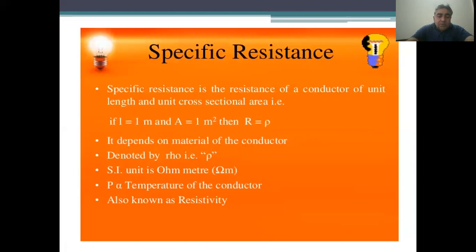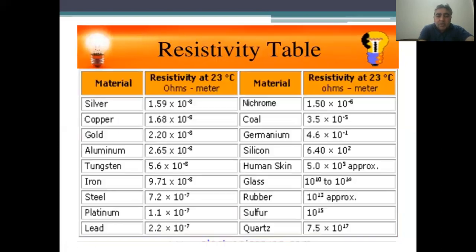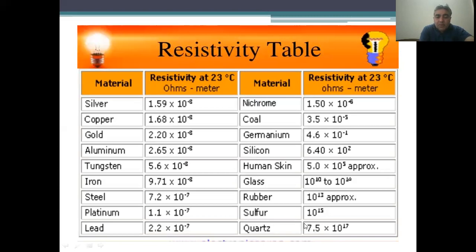Resistivity depends on the temperature of the conductor. It is also known as specific resistance. Different substances have different resistivity values — a table is provided which you can screenshot; it is also in the book. The resistivity of silver is very less, so it has high efficiency to pass current. Quartz has much more resistivity than silver.